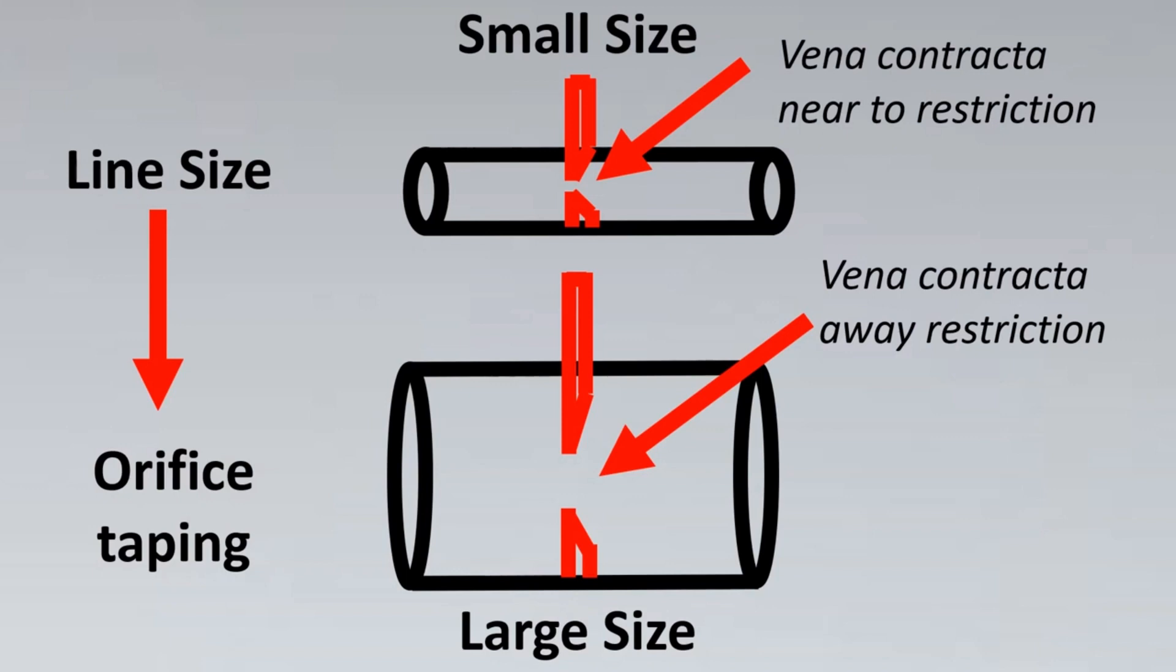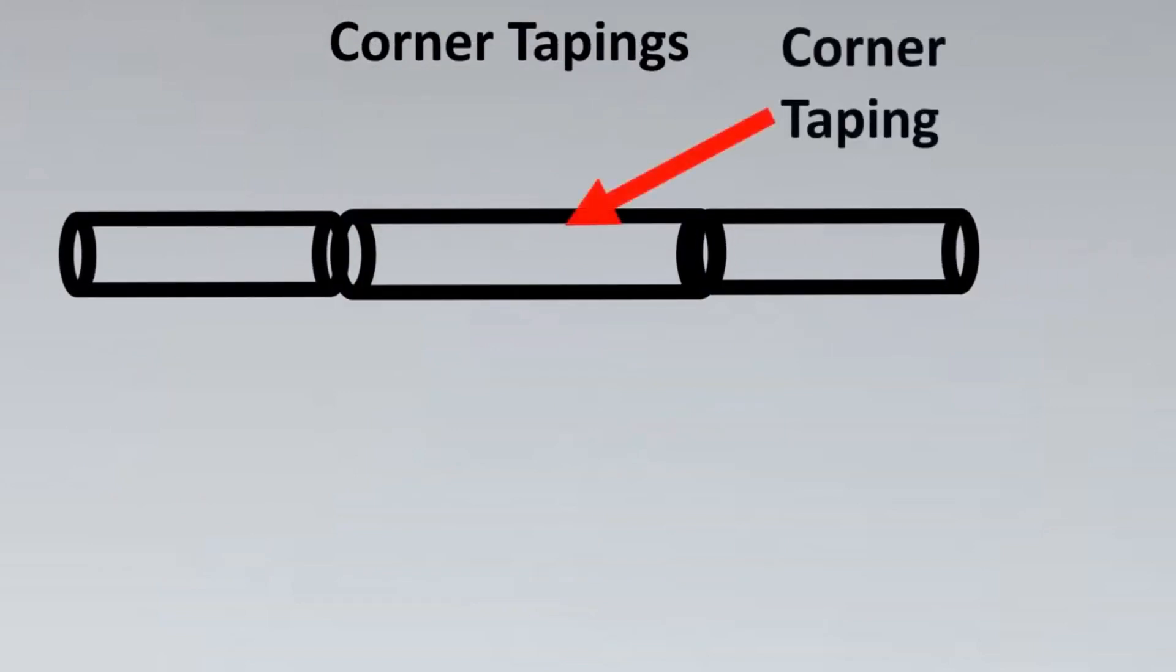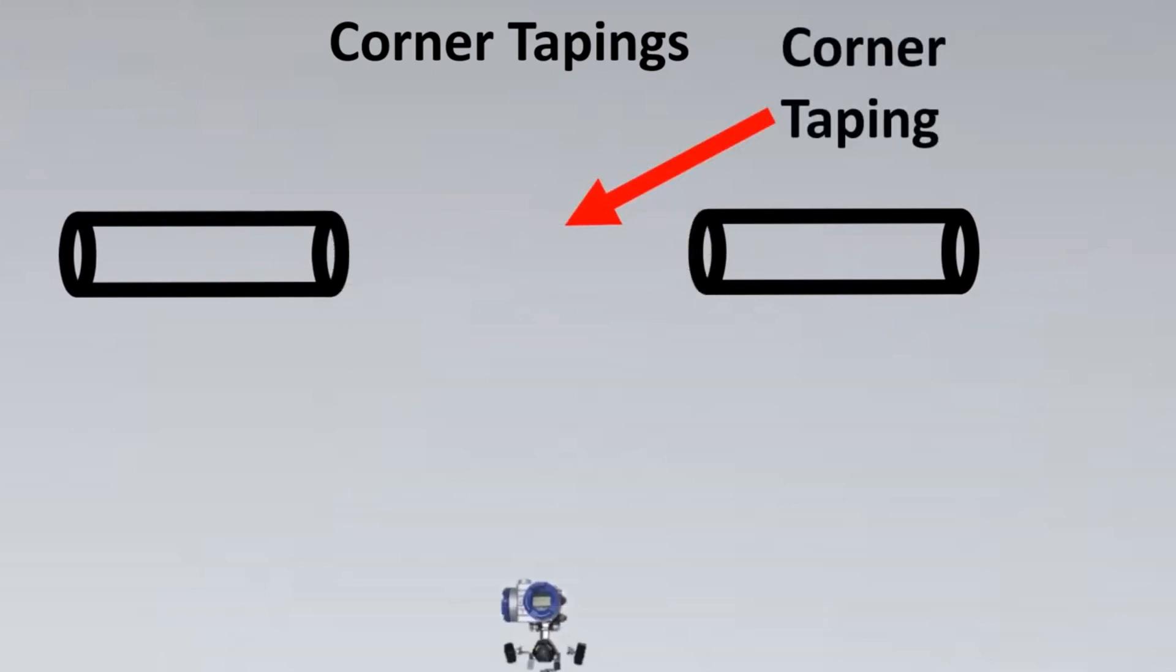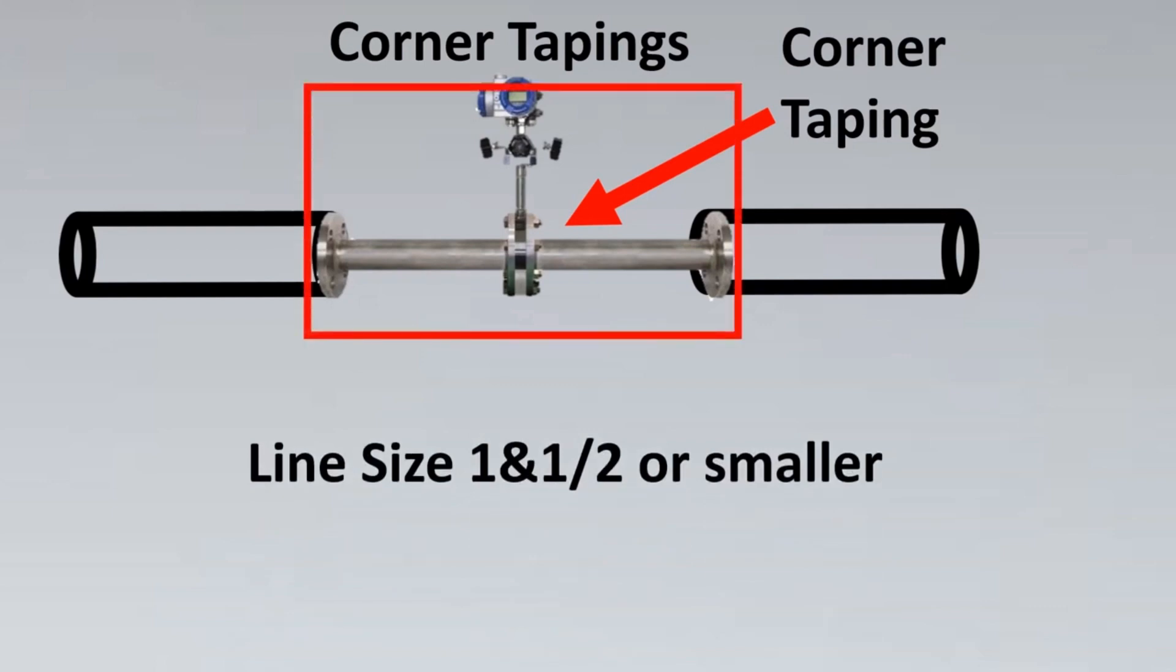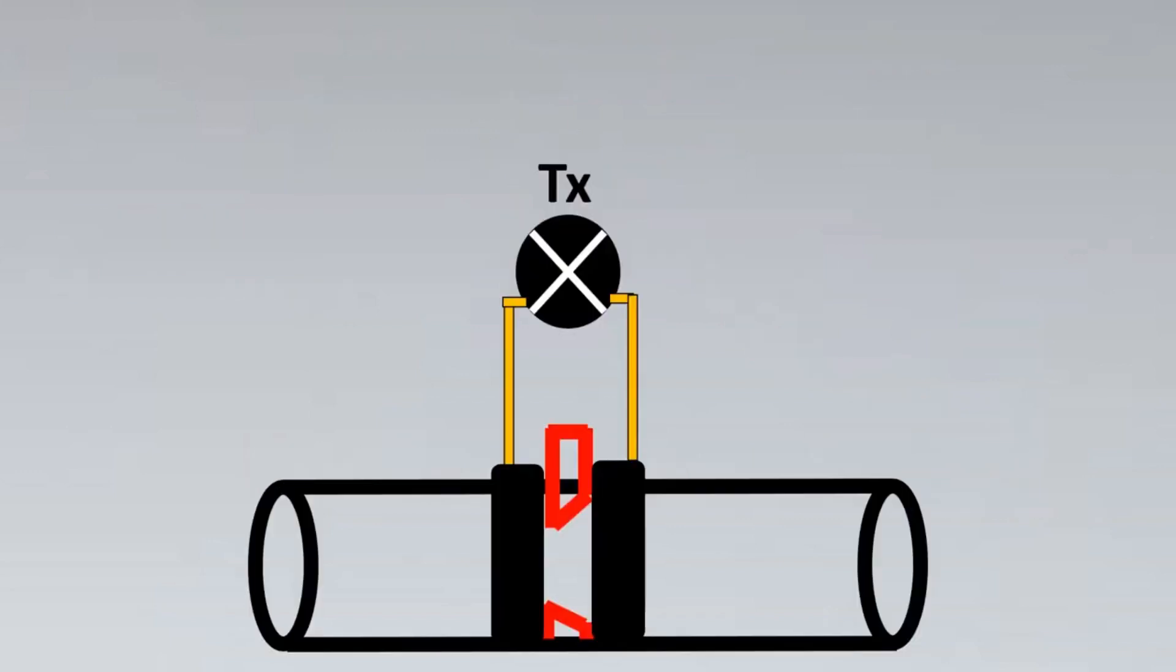For the first case, we will go for corner tappings. Imagine this is our piping assembly, and in this center we want an orifice with corner tappings because it is a small line size. Here we have an integral orifice assembly that is usually preferred for corner tappings. These corner tappings are usually preferred for line sizes which are 1.5 inch or smaller. This entire assembly is actually given to us by vendor, so we have to just mate the flanges which are at the end with our piping flanges in the system.